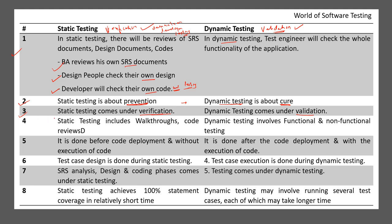The fourth difference: static testing includes walkthroughs and code reviews - we will discuss walkthroughs in detail in the upcoming lecture. Dynamic testing involves functional and non-functional testing. In static testing there will be reviews like peer review, and there are different types of reviews which we will discuss in upcoming lectures.